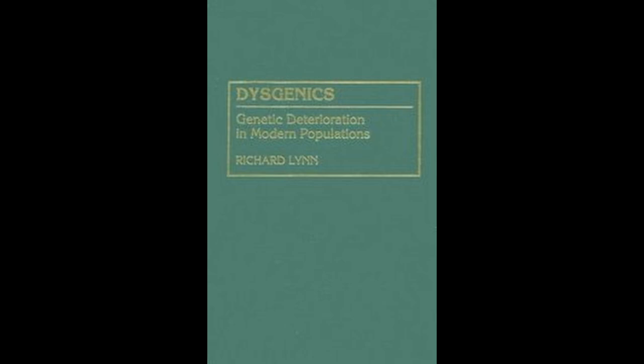The root cause of genetic deterioration of the populations of the Western nations is that natural selection against those with poor health became relaxed, and natural selection against those with low intelligence and poor character ceased to operate during the course of the 19th century. To understand the significance of this development, we need to consider how natural selection worked to keep the populations genetically sound in pre-industrial human societies, and the dramatic nature of the change that came about when natural selection broke down. This is our concern in the present chapter.